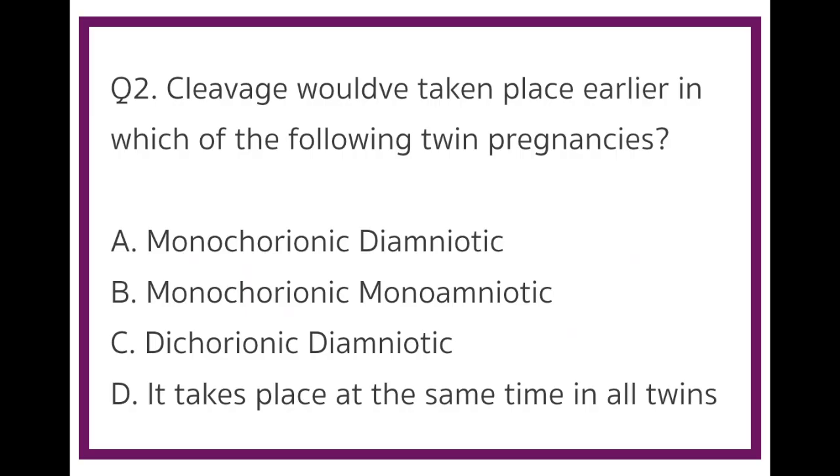Question 2. Cleavage would have taken place earlier in which of the following pregnancies? Option A monochorionic diamniotic. Option B monochorionic monoamniotic. Option C dichorionic diamniotic. Option D it takes place at the same time in all twins. The answer to this question is dichorionic diamniotic.